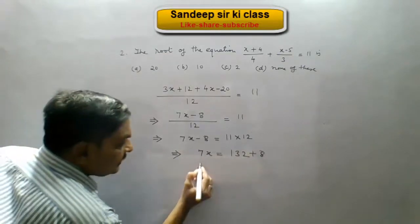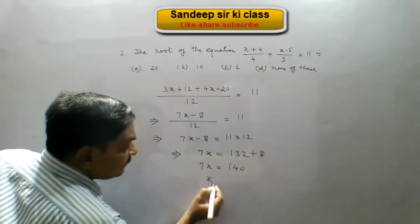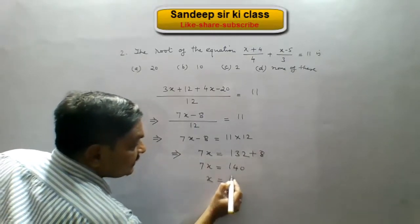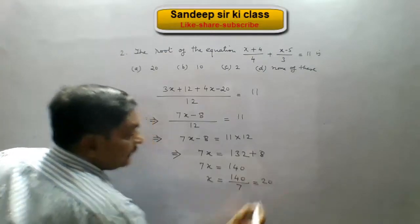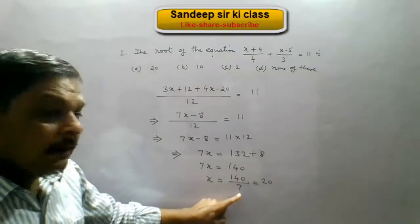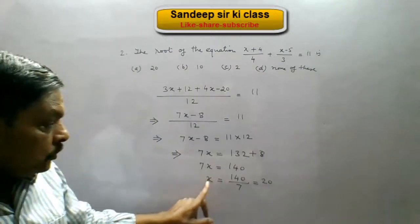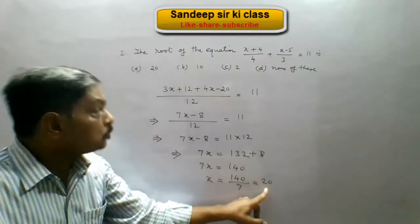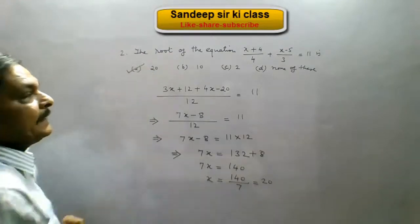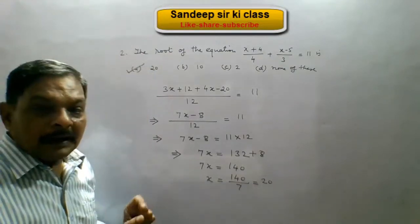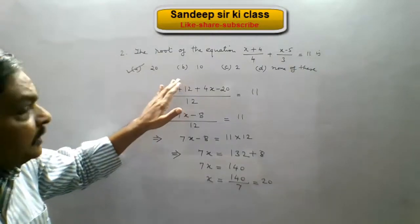So 7x equals 140, which gives us x equal to 140 upon 7, which is 20. So we get x equals 20 and hence our option A is correct. Another way of solving is to start with the options.